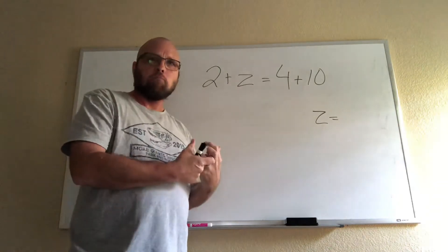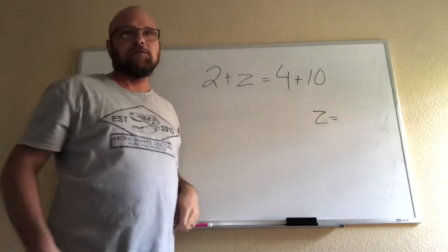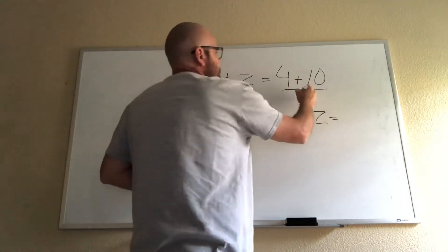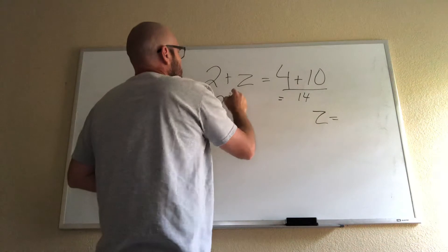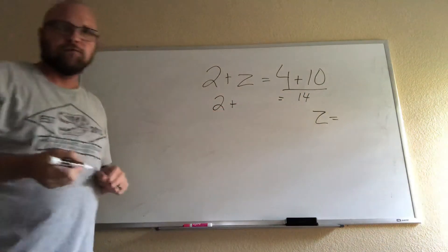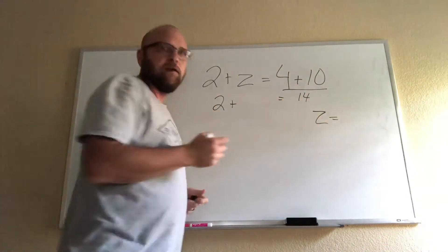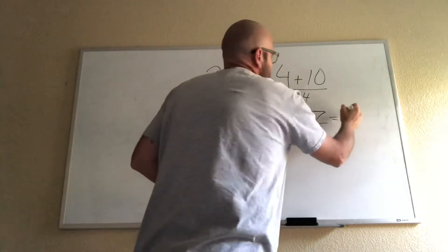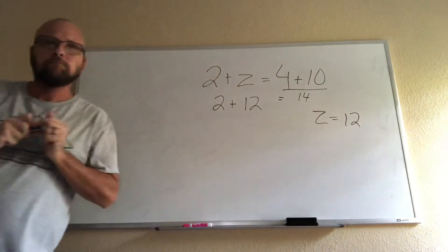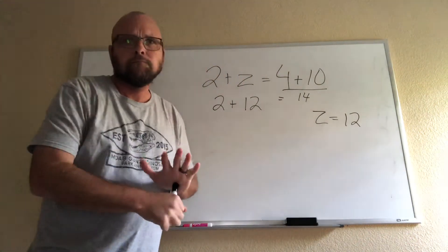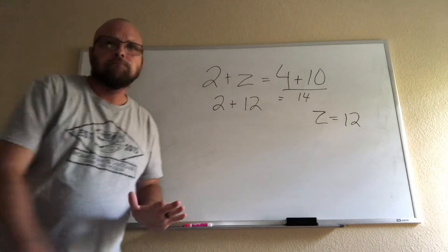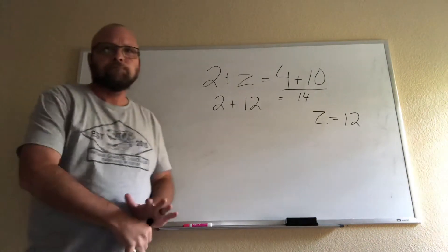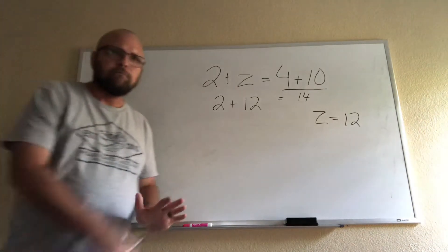Well, this side, 4 + 10 is 14. So then we have to figure out 2 plus what equals 14. And the answer is 12, so Z equals 12. So this is question 2 on the warm-up.